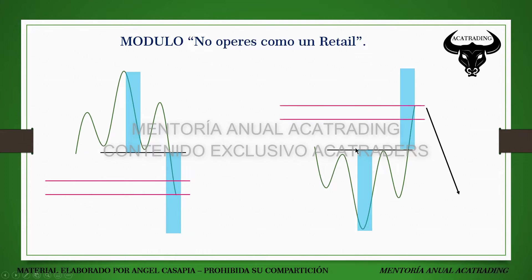En el caso de un hombro cabeza hombro invertido, lo haríamos identificando un better order block, un fair value gap superior, o un liquidity void. El precio neutralizaría esos mínimos porque por debajo probablemente haya un imbalance que tenga que ser rellenado, convirtiendo la zona en un contexto de low resistance liquidity run. Pero una vez rellenada esa zona, vamos a ver quantity de price action en el swing low que se forma allí, y luego de esa expansión bajista el ciclo se termina y el precio comienza a consolidar.